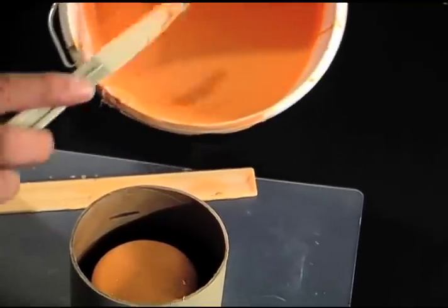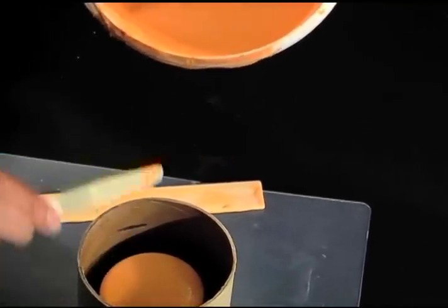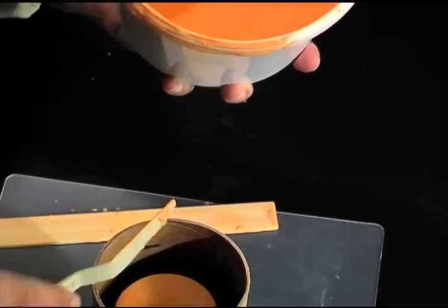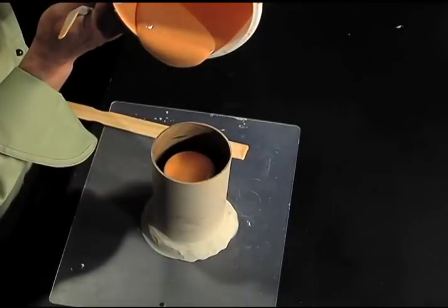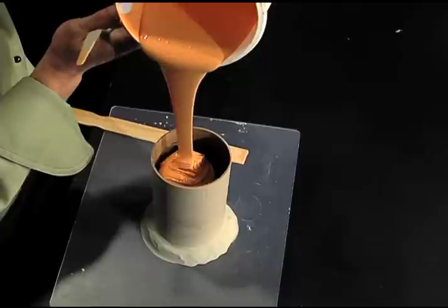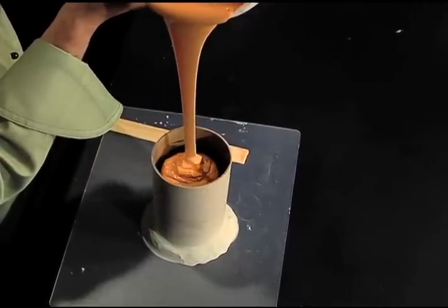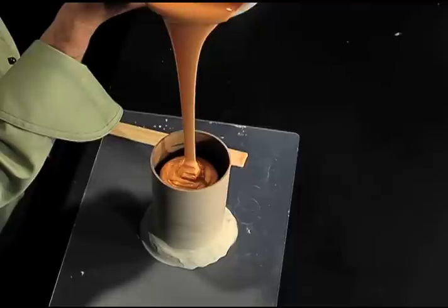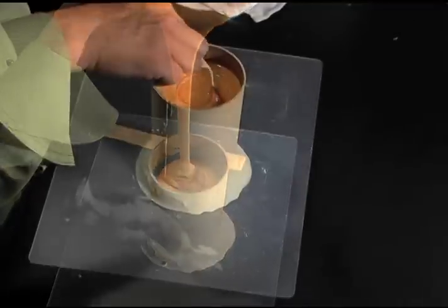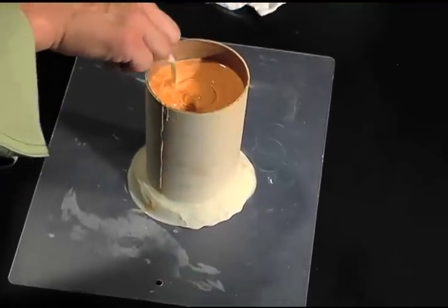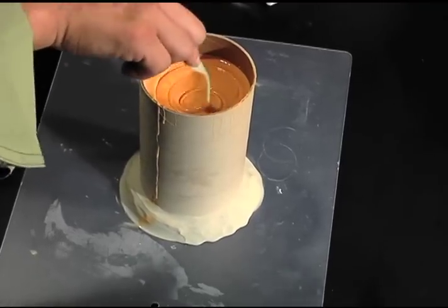Wait a couple minutes to allow the CopyFlex to seat itself around the bottom of the glass. Then, proceed to pour the rest of the CopyFlex to the pour line previously marked on the inside of the 2-bit. A shallow stir with a spatula helps to pop large bubbles that creep to the top.